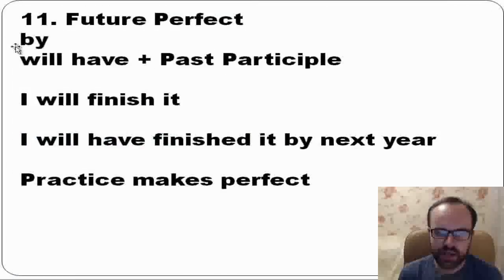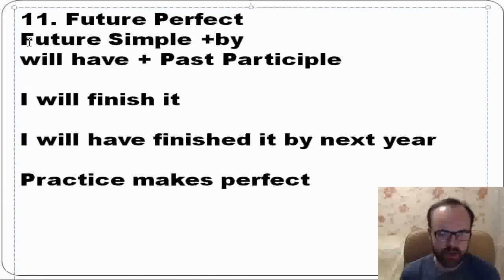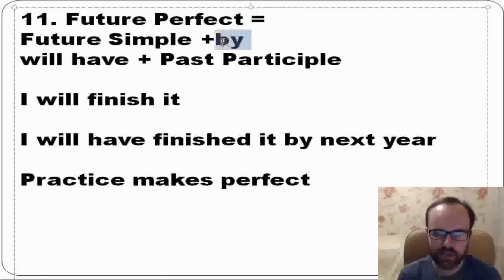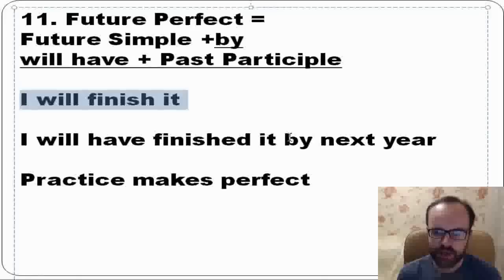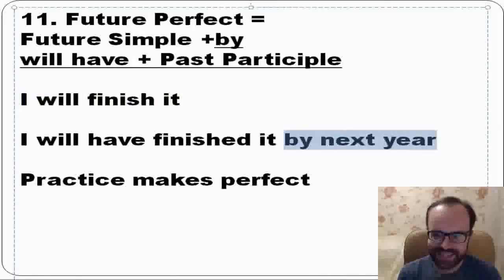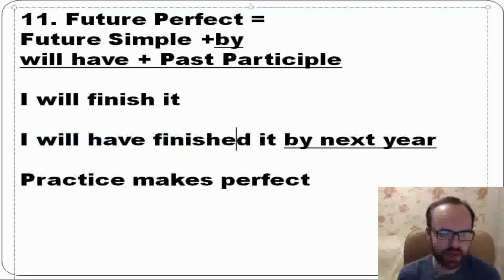Future perfect is like future simple, but you have 'by.' We form it with will have plus past participle — the third form. Compare: I will finish it. But if you have 'by': by next year, I will have finished it. Will have plus past participle. You need more exercises and practice — as they say, practice makes perfect.